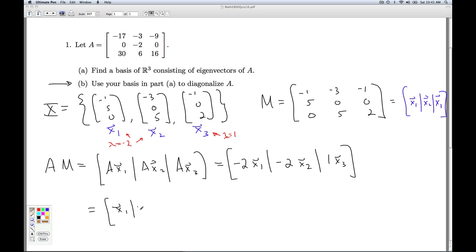Now I can use block multiplication again. Call this x1, x2, x3 times the diagonal matrix, negative 2, 0, 0, 0, negative 2, 0, 0, 0, 1. So in the i-th row, I've got the eigenvalue corresponding to the eigenvector in the i-th column of this matrix. That just gives me the matrix M again times the diagonal matrix D. So this is what I'm calling D.